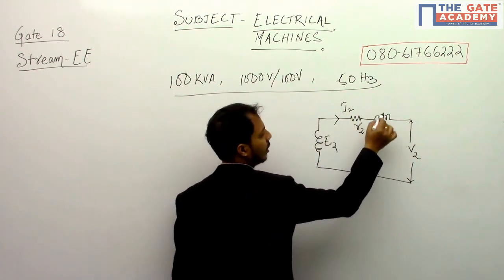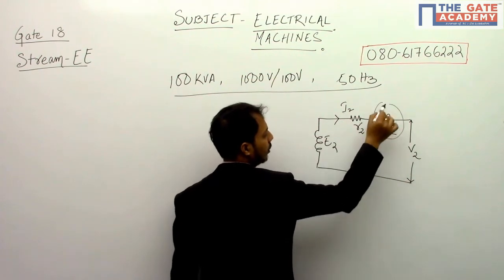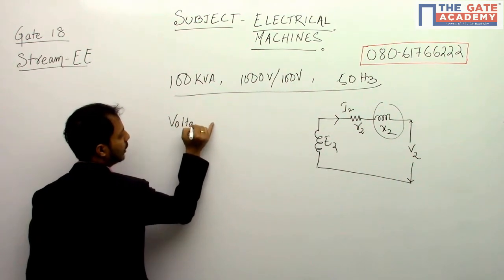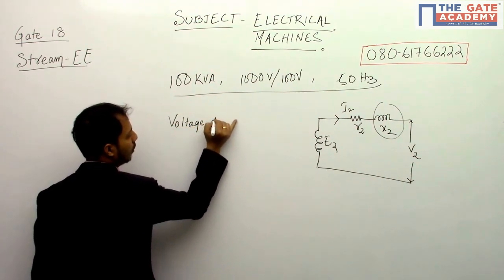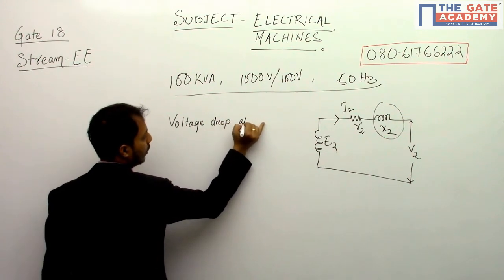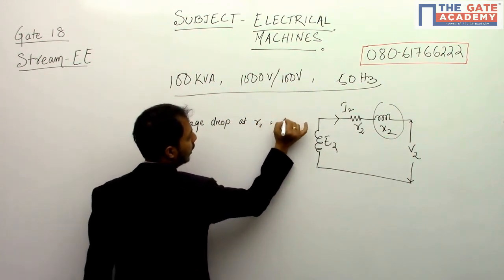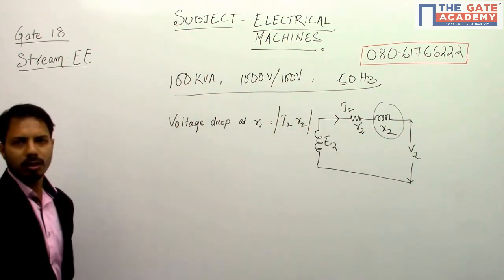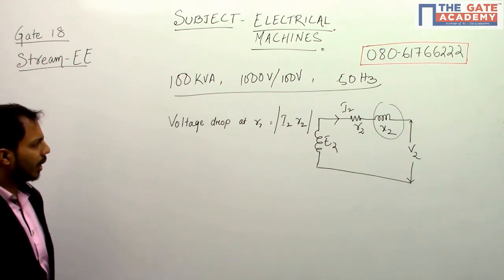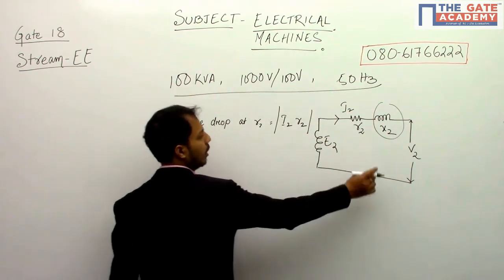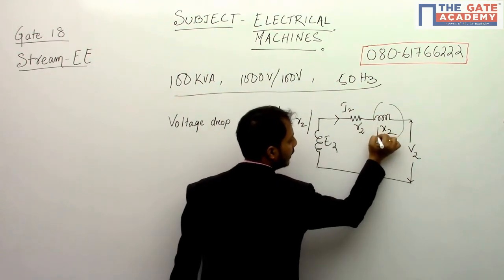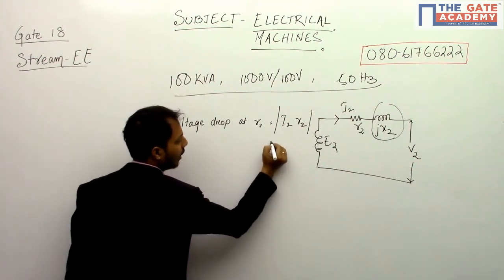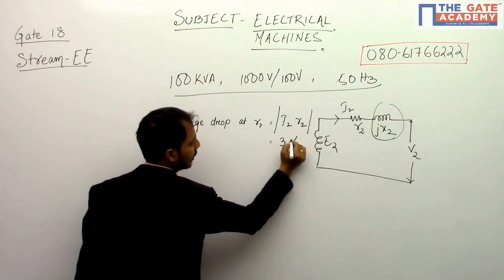So let us say the voltage drop at resistance R2 is I2·R2, and voltage drop... now this is jX2. Now this is given as 3%.